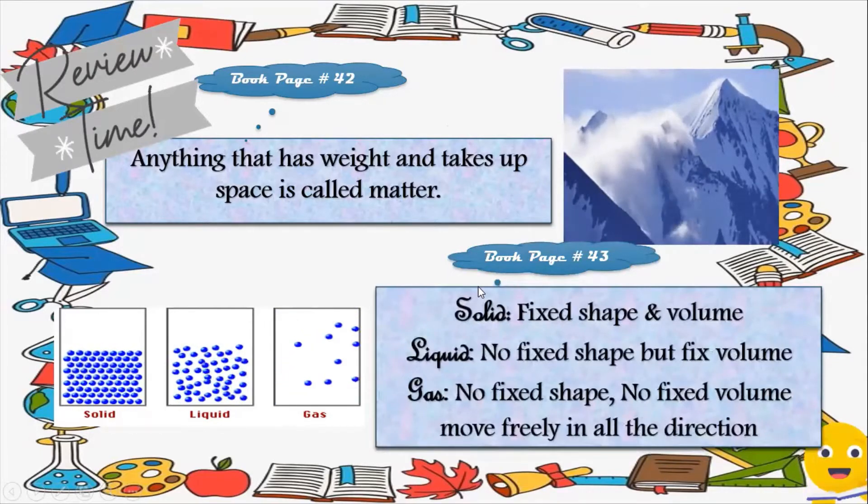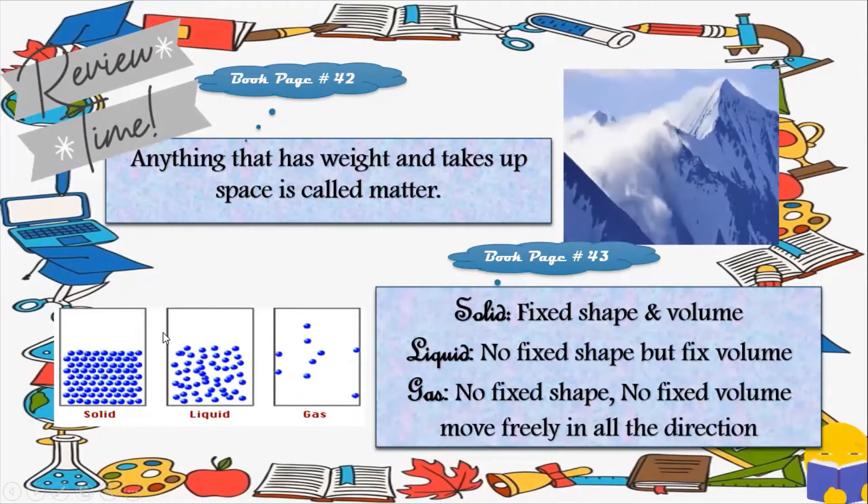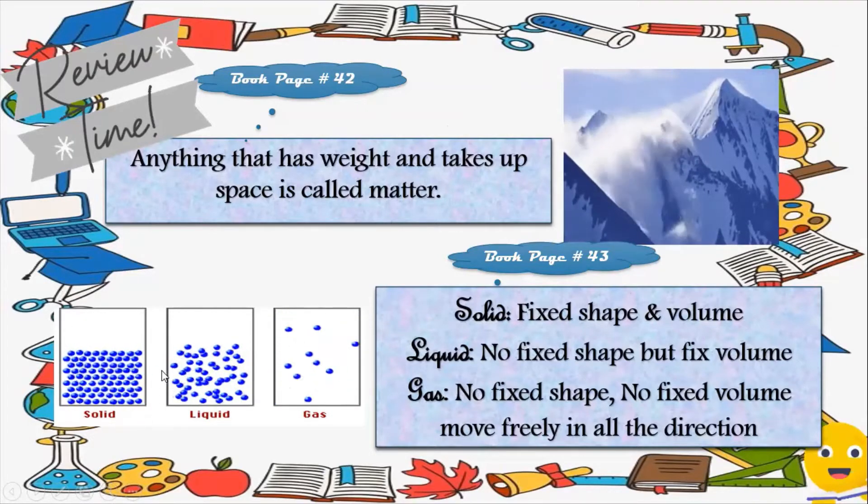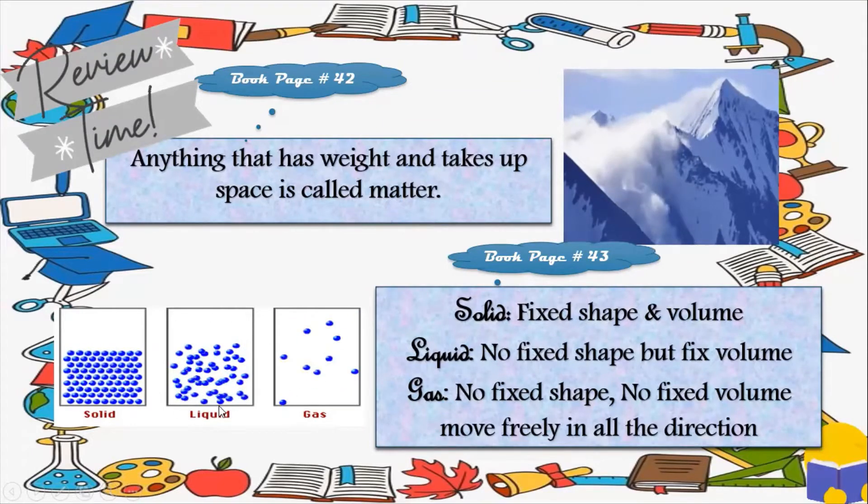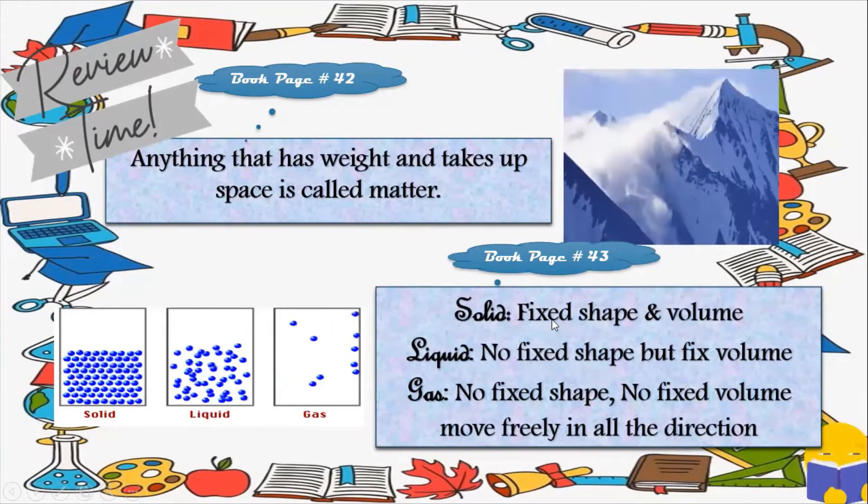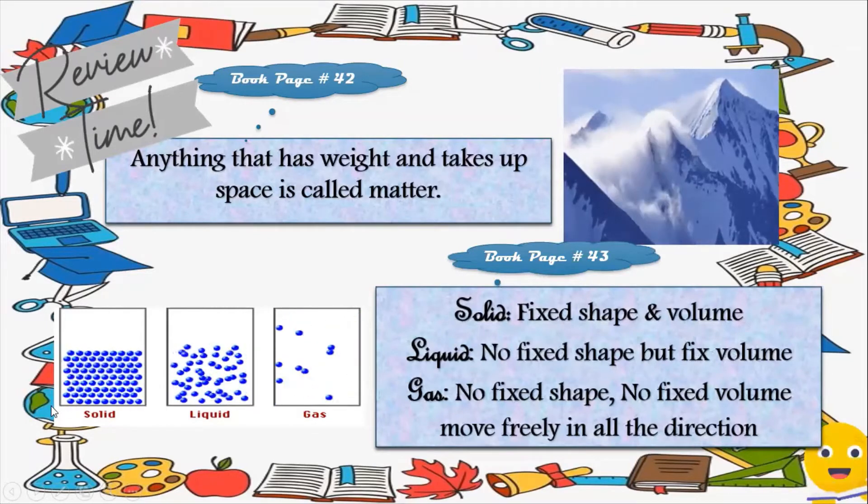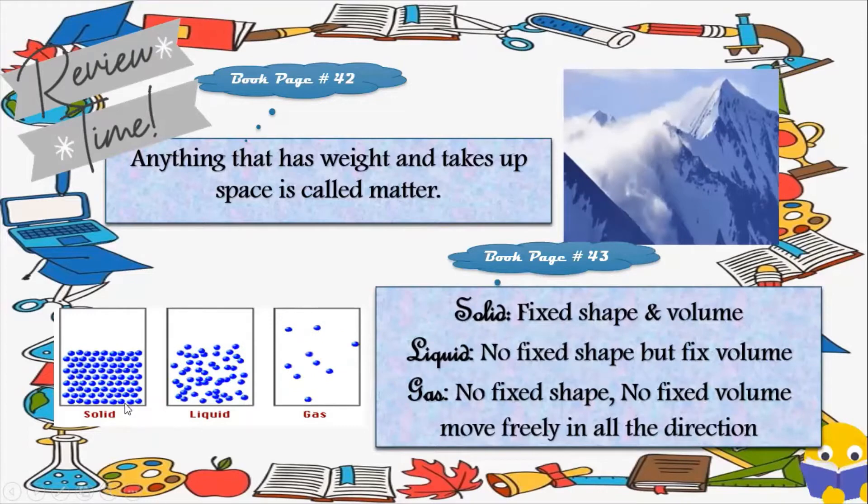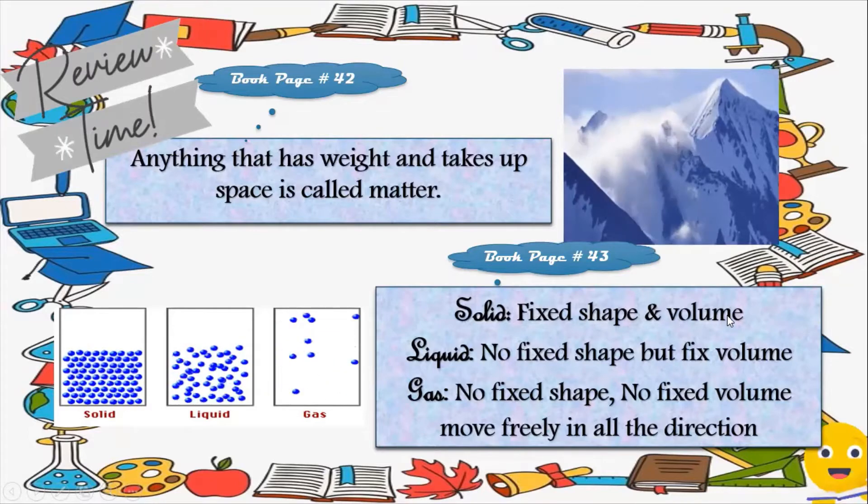States of matter. Matter can be found in three forms or states. The state of matter depends on the arrangement of its particles and also on the amount of space between them. Matter can be in solid form or in a liquid form or in the form of a gas. A rock is a solid, water is a liquid, and oxygen is a gas. Solids. In a solid, the particles are close together. They are linked to each other and are arranged regularly, and therefore a solid has fixed shape and fixed volume.